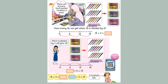Let us see this. Minus 6, that is 1 — 1, 2, and 3. So this is 3. Or you can use multiplication like this: 3 multiplied by 6 equal to 18. 6 multiplied by 3 equal to 18. So you can do it like that.